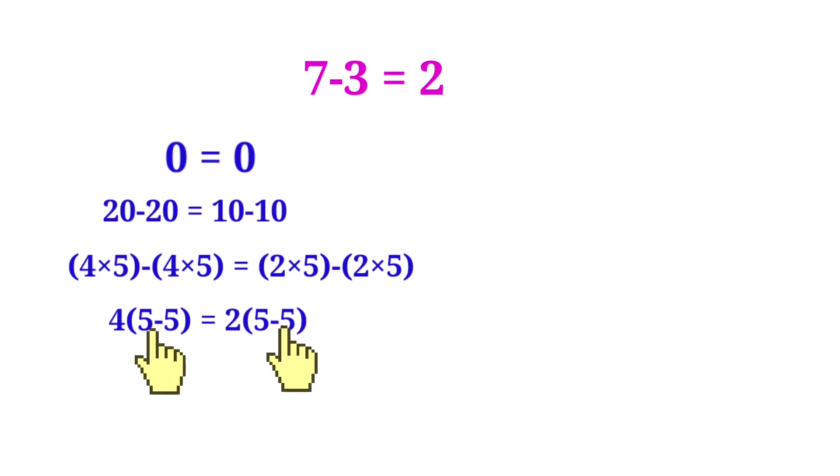Now see here, 5-5 and 5-5 both sides are common. So we can cancel the same terms. Then 5-5 and 5-5 are cancelled.